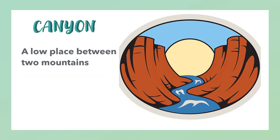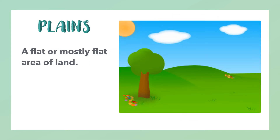Canyon: a low place between two mountains. Plains: a flat or mostly flat area of land.